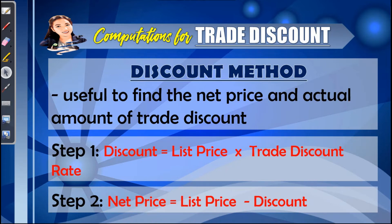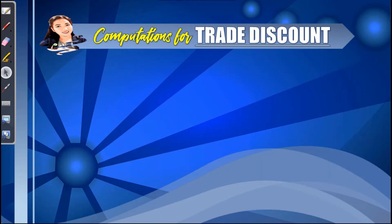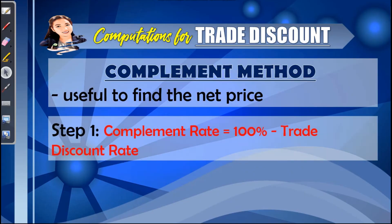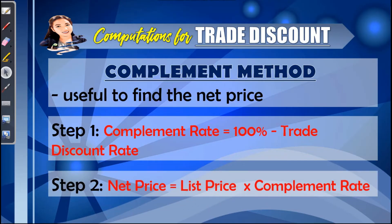For the complement method, this is only useful to find the net price. Step one, find the complement rate, which is 100% minus the trade discount rate. Step two, the net price is equal to the list price times the complement rate. Let us now apply the following formulas in our examples.